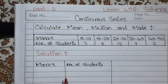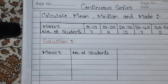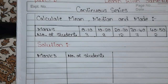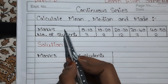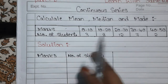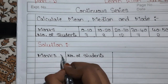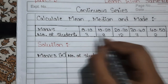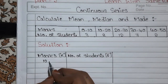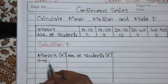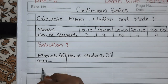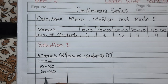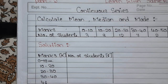Whenever you are calculating, whatever is given in the question, you have to take it. We have a marks column and a number of students column, so we take marks as x and number of students as f. Sometimes they mention x and f, sometimes they don't — if not mentioned, you take marks as x and number of students as f. The class intervals are: 0–10, 10–20, 20–30, 30–40, 40–50.